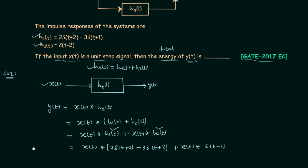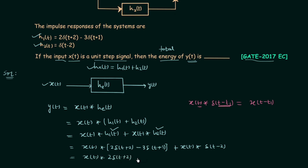To simplify this we use one more property of convolution that we have used in previous lectures: x(t) convolved with δ(t−t1) is equal to x(t−t1) — in place of t we write t minus t1. For the first term we need the distributive property again, giving us: x(t)*2·δ(t+2) minus x(t)*3·δ(t+1), and the last term x(t)*δ(t−2) remains as is.